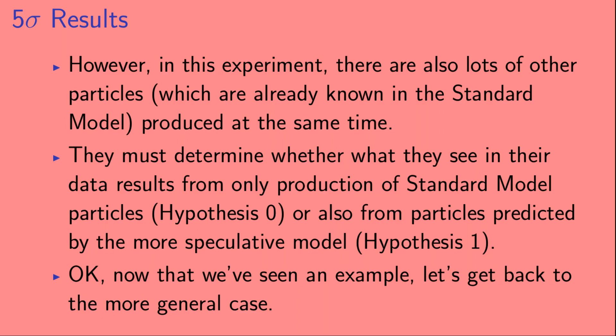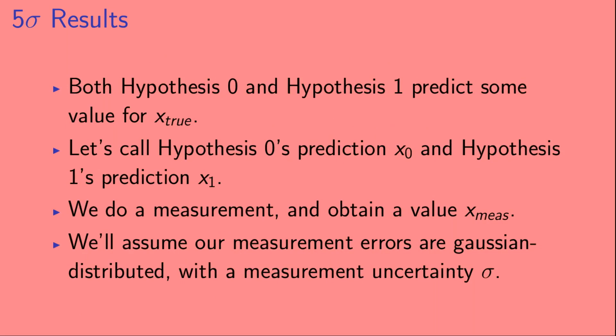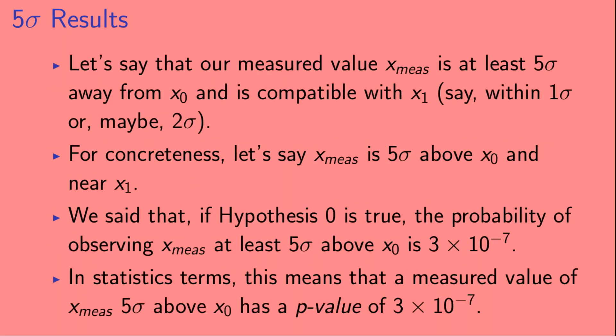Okay, now that we've seen an example, let's get back to the more general case. Now, both hypothesis 0 and hypothesis 1 predict some value for x_true. Let's call hypothesis 0's prediction x0 and hypothesis 1's prediction x1. We do a measurement and obtain a value x_meas. We'll assume our measurement errors are Gaussian distributed with a measurement uncertainty, sigma. Let's say that our measured value, x_meas, is at least 5 sigma away from x0 and is compatible with x1, say, within 1 sigma or maybe 2 sigma. For concreteness, let's say x_meas is 5 sigma above x0 and also it's near x1.